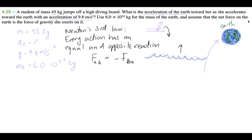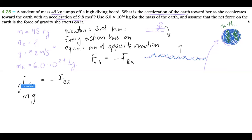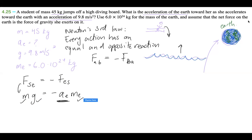That's Newton's third law. So what does that have to do with this question? If this student is exerting some force on the earth — no matter how small — the earth is exerting an equal and opposite force back on her. So the force of the student on the earth equals the force of the earth on the student. We know the force of the student on the earth is m times g, her mass times gravity. The force of the earth on the student equals the acceleration of the earth times the mass of the earth.